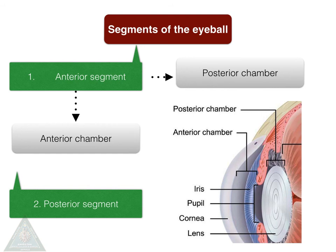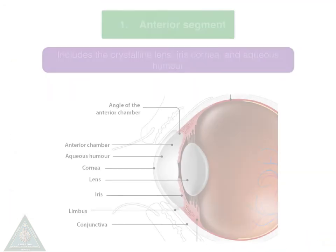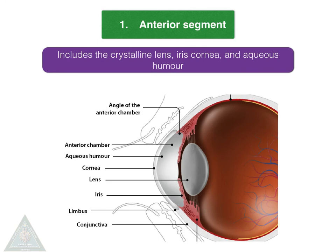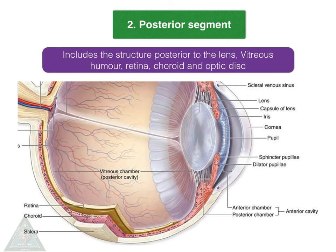The segments of the eyeball are the anterior and posterior segments. The anterior segment is divided into the anterior chamber and the posterior chamber, and includes the crystalline lens, iris, cornea, and aqueous humor. The posterior segment includes all structures posterior to the lens: namely the vitreous humor, retina, choroid, and optic disc.